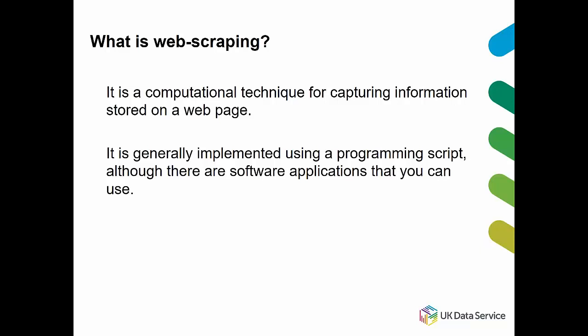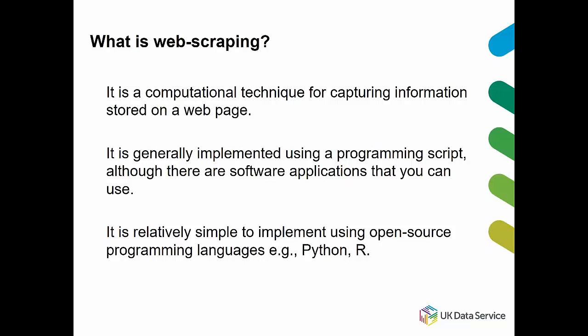Web scraping is generally implemented using a programming script — executable code written in a programming language such as R or Python, Java, C# etc. There are software applications on the market that can do web scraping for you, but to have full flexibility and power you'll use a programming language and write your own code. It is relatively simple to implement using open source languages; you don't need to write screeds of code. Web scraping is quite common in computational social science, with lots of documentation and examples, so it's a great entry point.